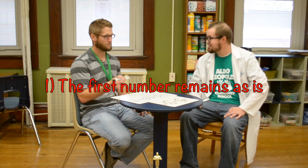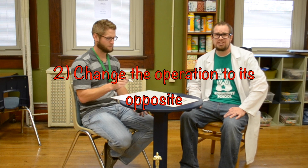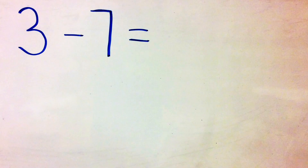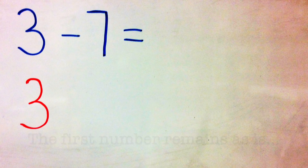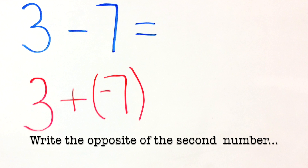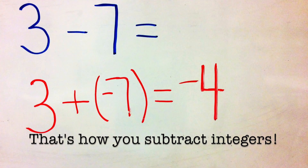Well, that's not so bad. Not at all. So, what were those three steps that we did? First one is the first number remains as is. Second, change the operation to its opposite. And the third one is write the opposite of the second number. There's just a catchy way to remember those three steps: the first number remains as is, change the operation to its opposite, write the opposite of the second number. And that's how you subtract integers.